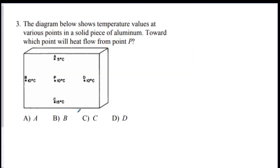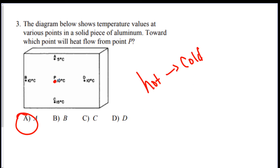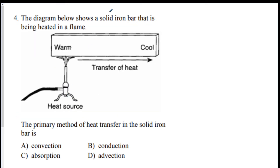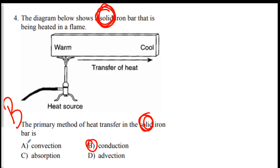Question 3: the diagram shows temperature values at various points — toward which point will heat flow from point P? Hopefully you picked A. Everything always goes from source to sink, or hot to cold. The only one colder than 10 is 5, so the heat goes there. Question 4: the diagram shows a solid iron bar being heated in a flame — which heat transfer is occurring? The answer is B, conduction, because that happens in solids.